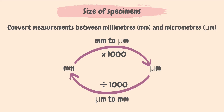In case a question has been given with units in micrometers, we should know how to convert to millimeters. To convert from millimeters to micrometers, multiply the number by 1,000. To convert from micrometers to millimeters, divide the number by 1,000.